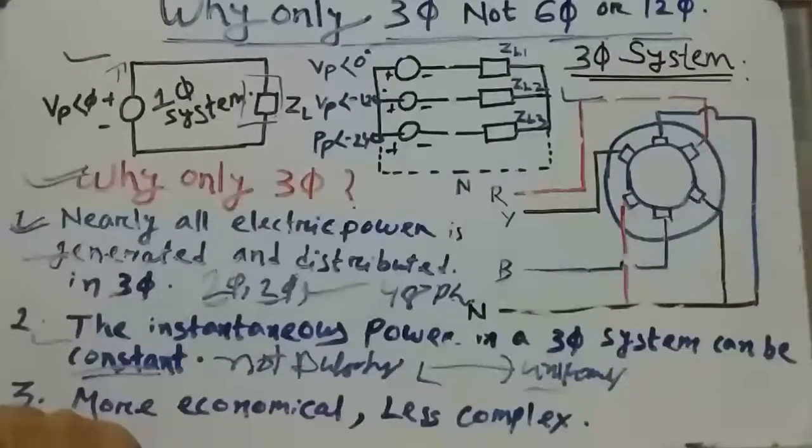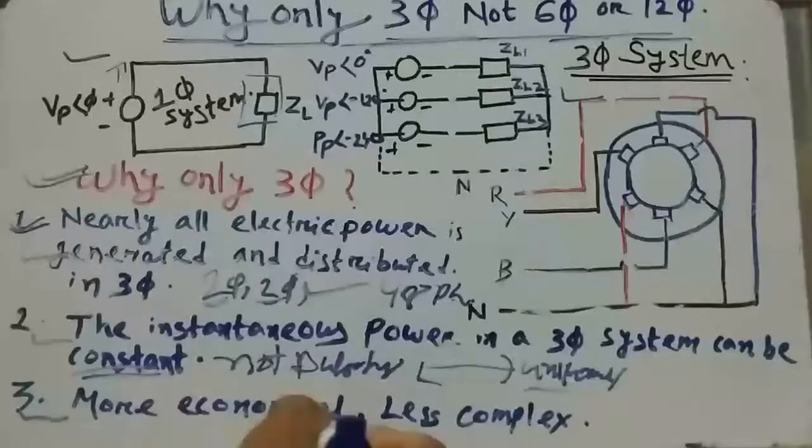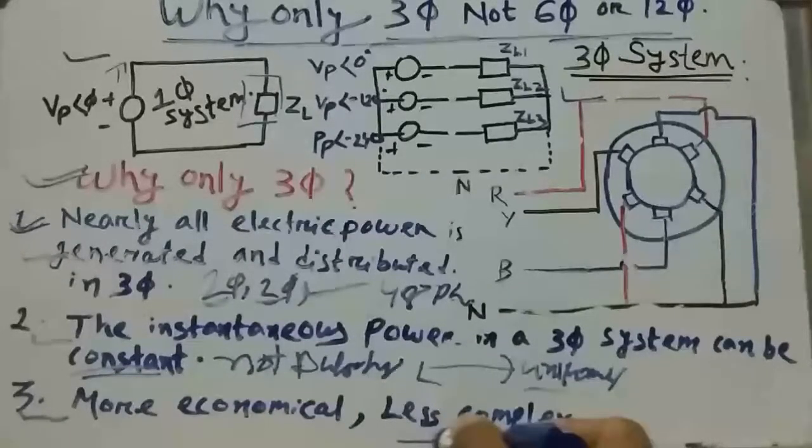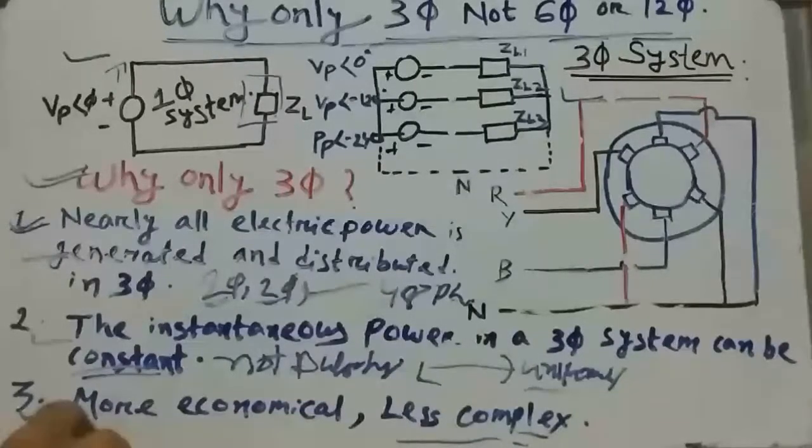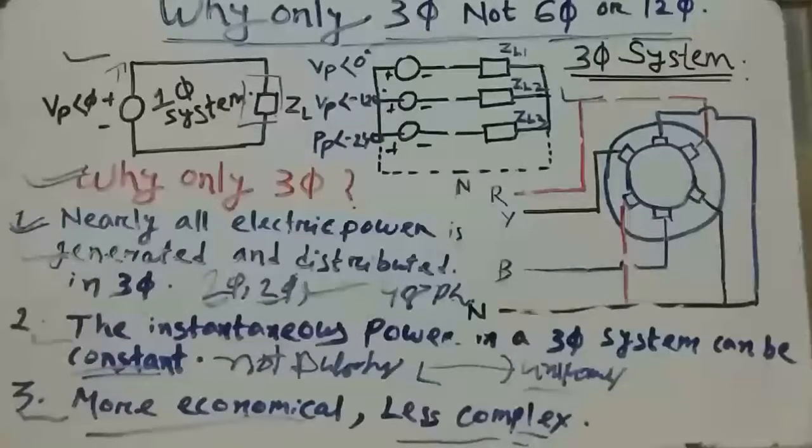Third point is this 3 phase system is more economical and less complex. In case of a 3 phase we need 3 number of circuit breakers and at least 6 number of isolators.